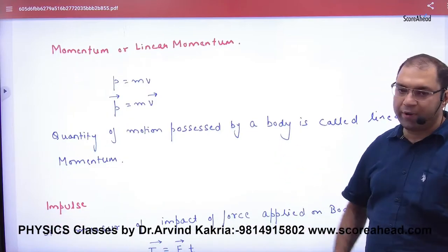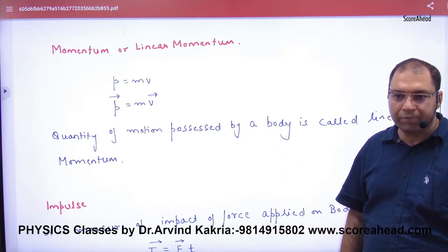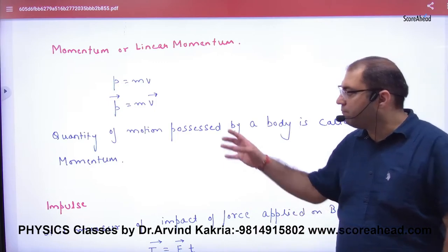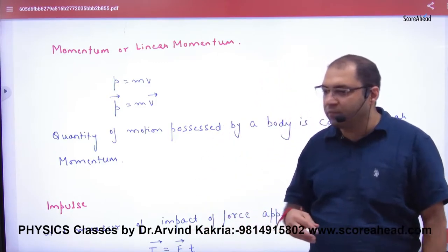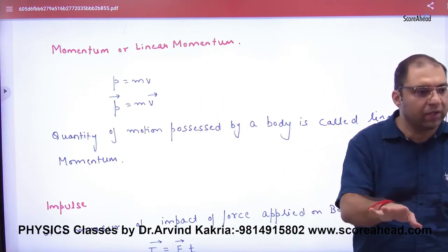So momentum or linear momentum, we represent as p, from mass into velocity. p is a vector. Linear momentum is a vector quantity and velocity is a vector quantity. p vector is equal to m into v vector.